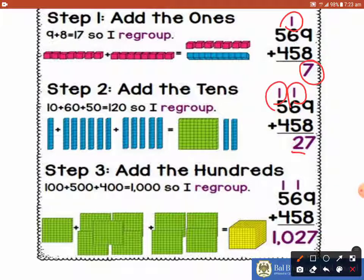Finally, we have hundreds place. On hundreds place, we have 5 and 4. 5 added to 4 gives you 9 but there is one carryover on the top that will make it 10. So the result will become 1027.